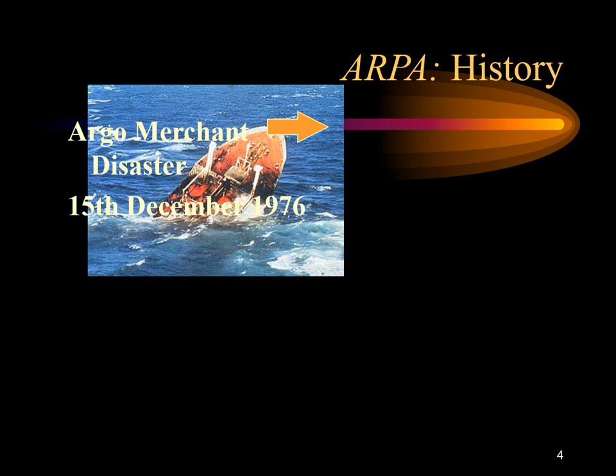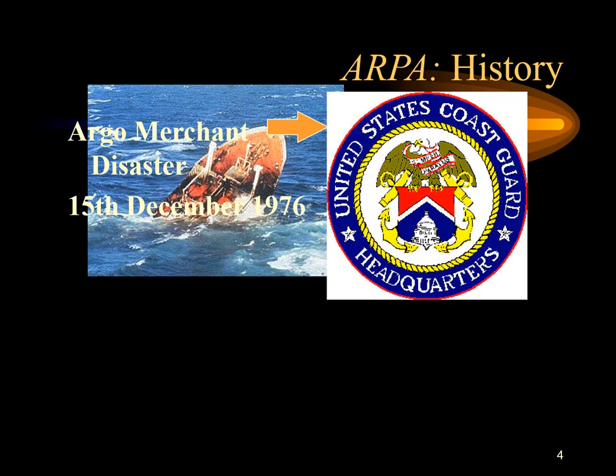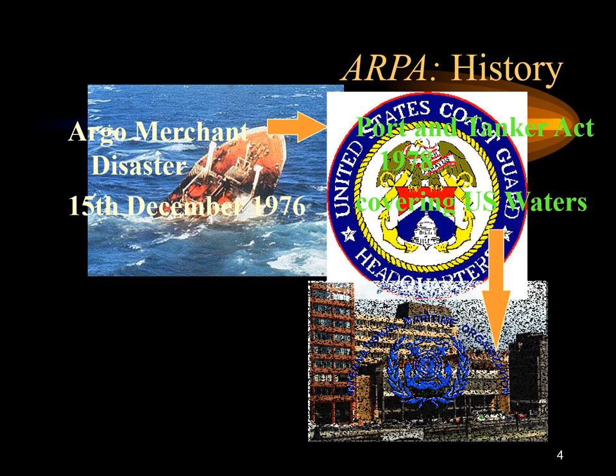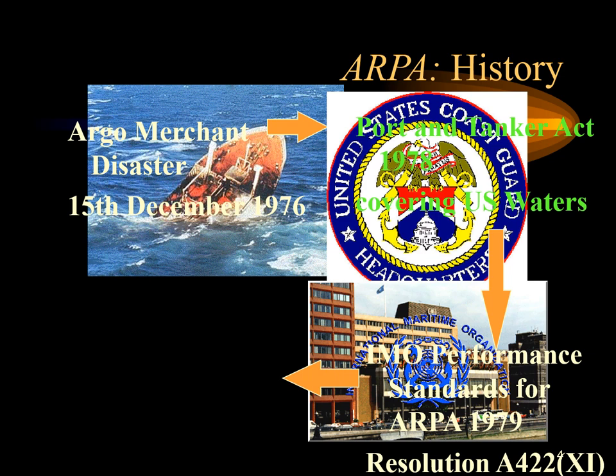Let me give a brief history of how the ARPA came about. The basis of ARPA was the Argo Merchant disaster in 1976, where the Argo Merchant tanker grounded off the coast of the USA and caused massive pollution over a rich fishing ground. Environmental groups pressured the U.S. Congress during an election year to respond, and Congress passed the Port and Tanker Act of 1978.